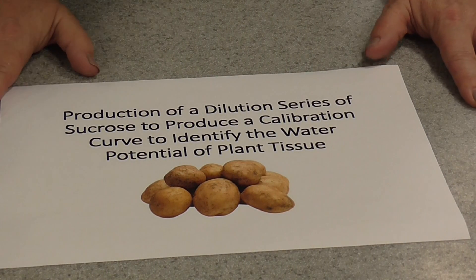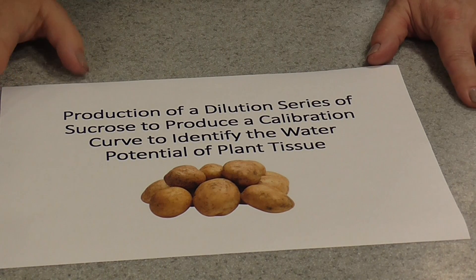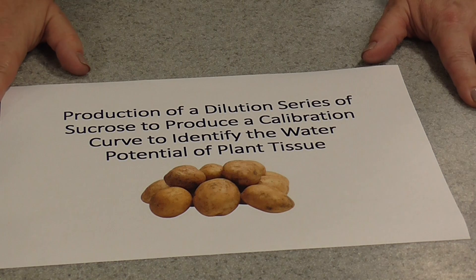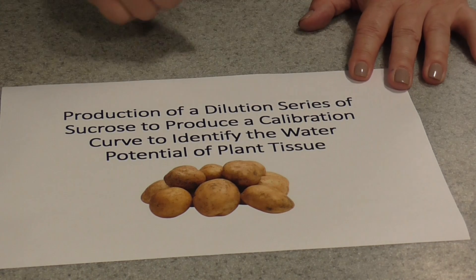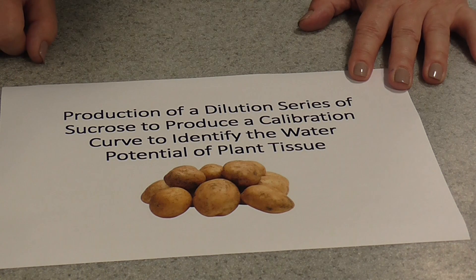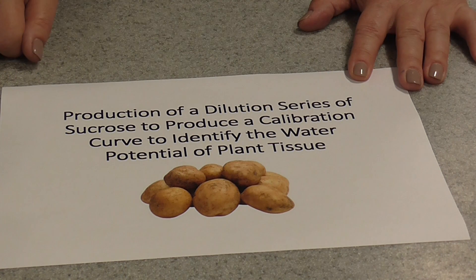Today I'm going to show you how to do one of the A-level biology required practicals. You need this for the AS and the A-level biology and it's the production of a dilution series of sucrose to produce a calibration curve to identify the water potential of plant tissue.